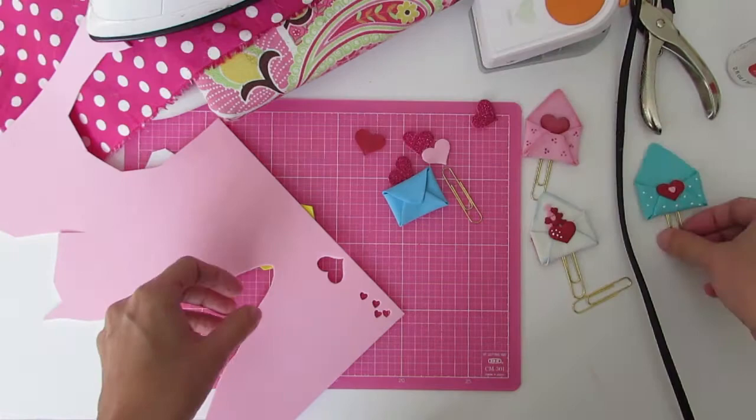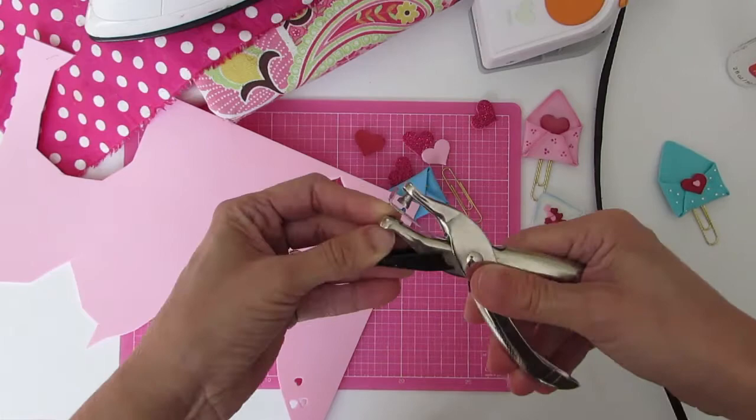Here's a quick demo of the Fiskars Thick Punch. This punch is great because it cuts foam. I cut a few hearts here in different colors and I even used glitter foam, and that is my heart hole puncher. You could probably locate this at any local craft store. The Fiskars Thick Punch I bought that at Joann.